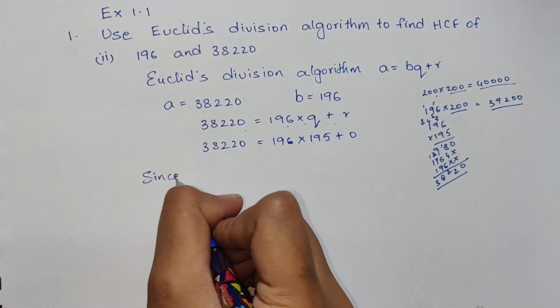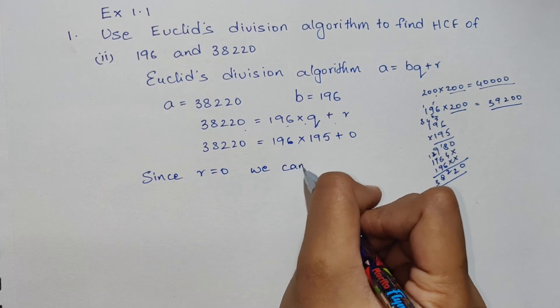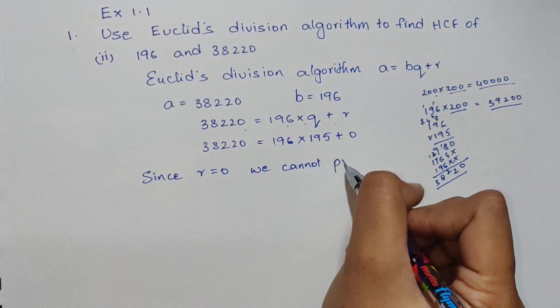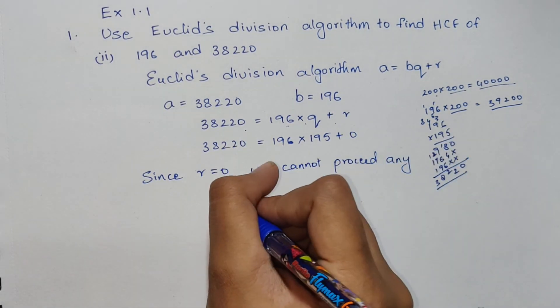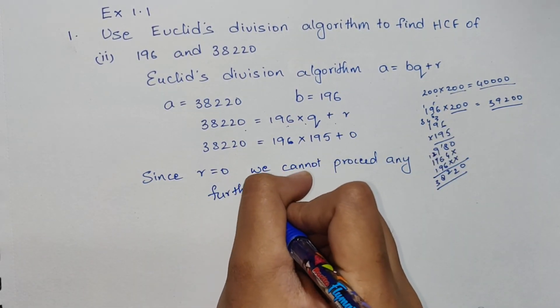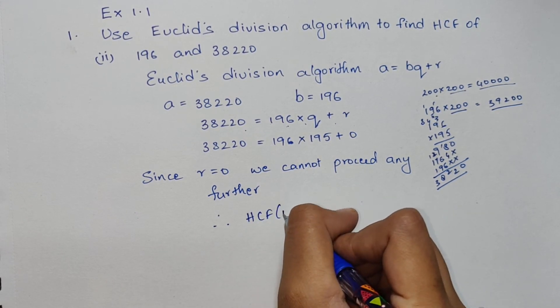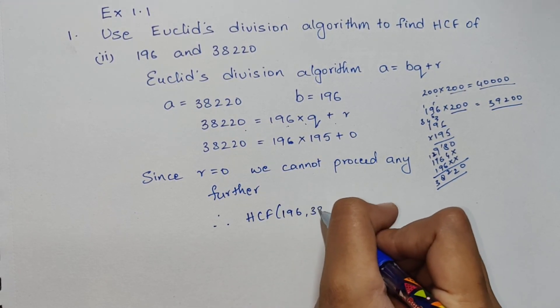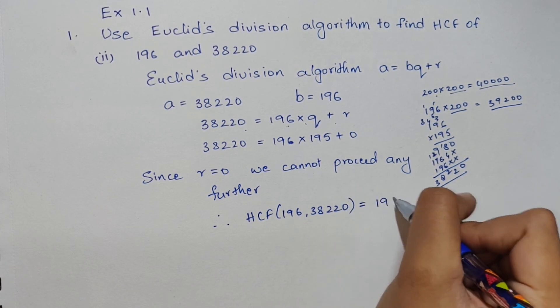Since our remainder is 0, we cannot proceed any further. Therefore, the HCF of 196 and 38,220 is 196.